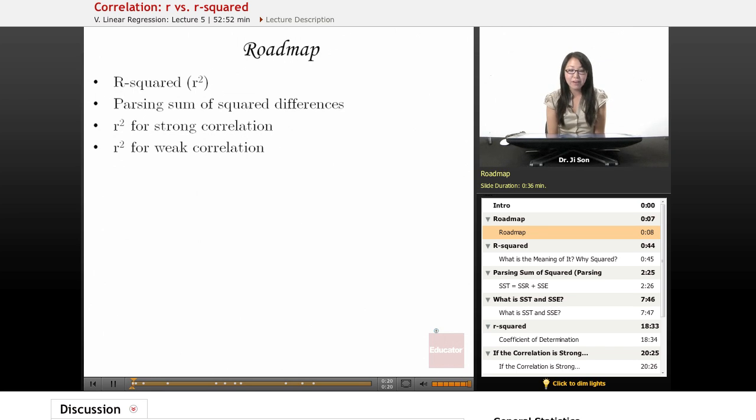Well, we want to know what the meaning of r squared is. And so in order to get to the meaning of r squared, we have to understand that sum of squared differences is actually going to split apart into different ways. And so we're going to learn how to parse the different parts of the sum of squared differences. Then we're going to talk about what r squared means for a very strong correlation and what r squared might be for a very weak correlation.